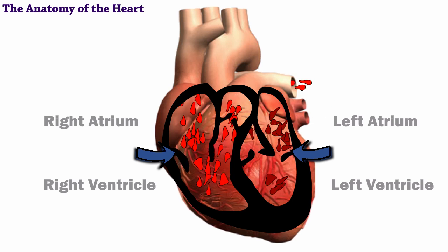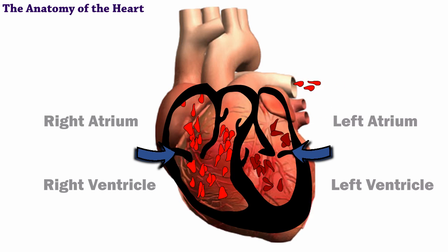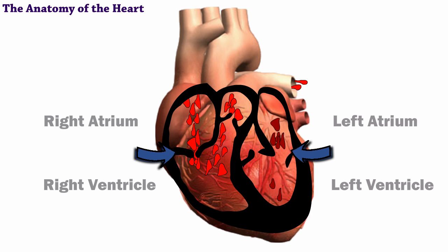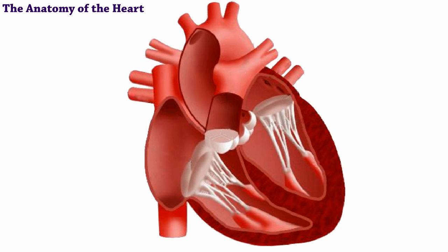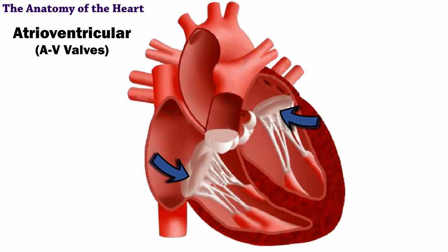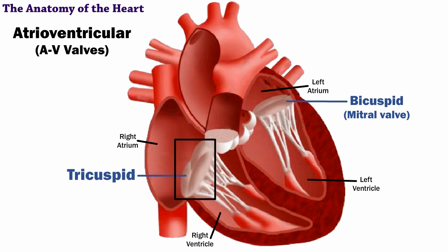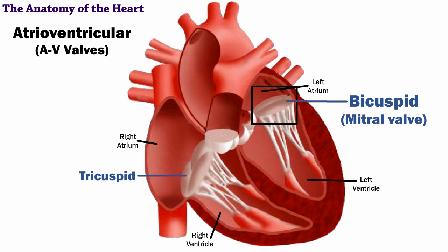Watch as the valves open and close between the atria and ventricles. The atrioventricular, or AV, valves are between the atria and the ventricles on each side of the heart. They are the tricuspid and the bicuspid, or mitral, valve. The tricuspid is on the right side, and the bicuspid, or mitral, is on the left side.